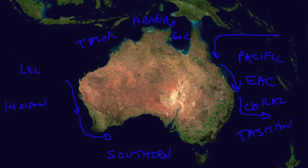Most places in the world, the west coast has cool water currents flowing towards the poles. In the Australia case, that's the Lewin Current. And then a weak Southern Australian Current going from west to east across the bottom of Australia. So those are the major ocean currents.